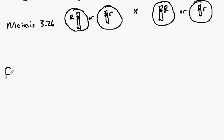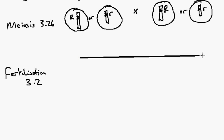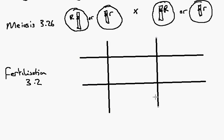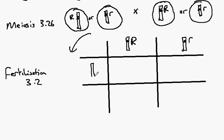The fertilisation is demonstrated by drawing a table. The ovules — theoretically half of them — will have the big R allele, and the other half could have the little r allele. These are the two possible kinds of ovule. Bringing down the male gametes, the pollen grain would either be carrying the big R allele or the little r allele.